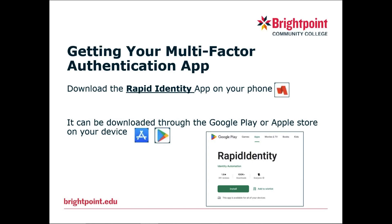First things first, you want to make sure you have the Authenticator app downloaded to your phone. The one we recommend is the Rapid Identity app, which you can find either in the Play Store or Apple Store depending on your device. The exact logo should look like this, and inside the Play Store it should look like this. Make sure you download the right one.